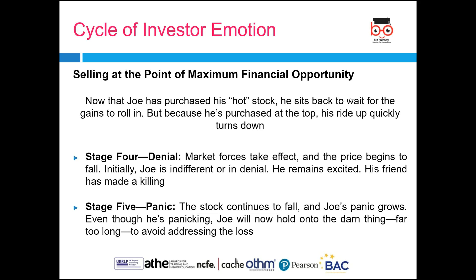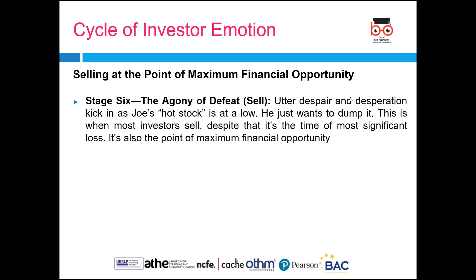In stage five, panic sets in, which means the stock continues to fall and Joe's panic grows. But even though he is panicking, he will still hold on to the stock with the hope that it will turn upwards quickly and his loss will be recovered. Then finally at stage six, where you have the maximum opportunity to buy, what the average investor does is experience utter despair and desperation as his stock is at a low. He wants to dump it.